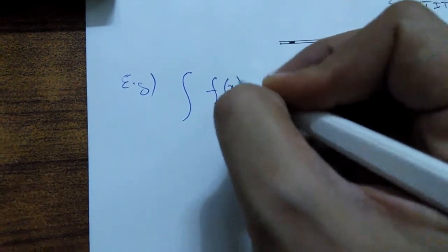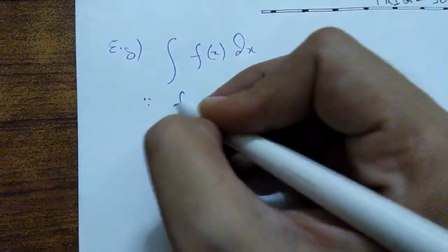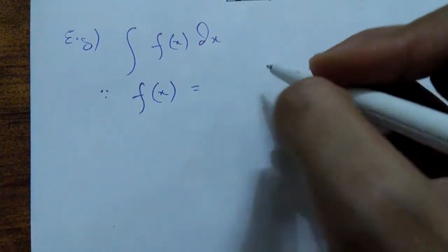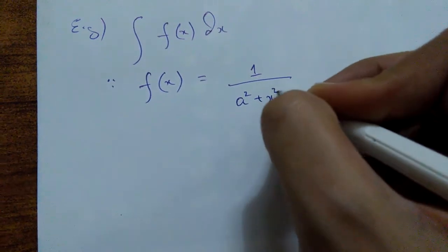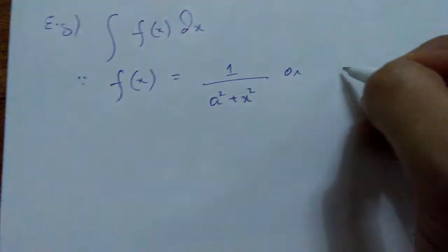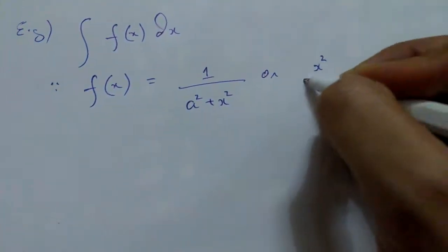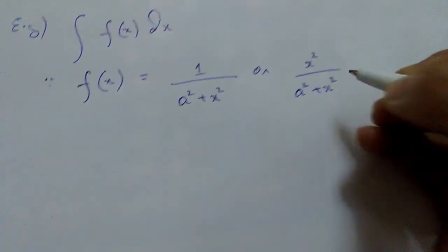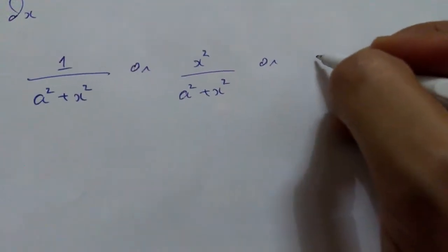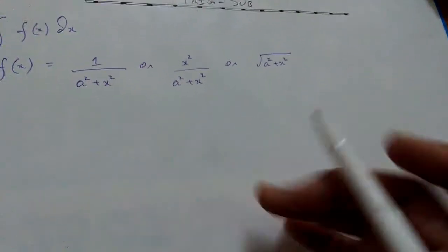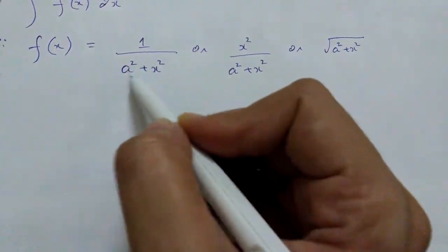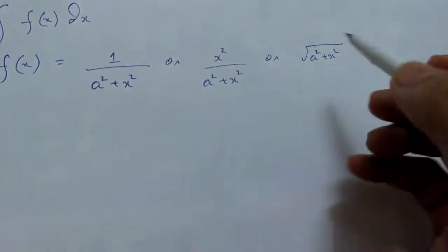In general, if your function f of x is expressed such that it contains a term like x squared upon a squared plus x squared, or under a square root of that form — if the integrand has an appearance of this type, either in the denominator or in the numerator, then you are going to use a specific substitution.